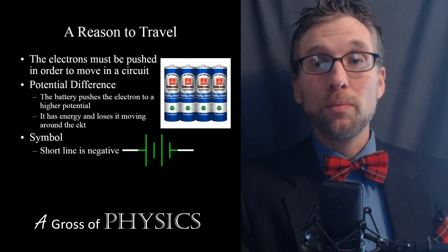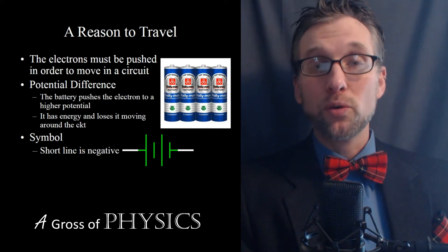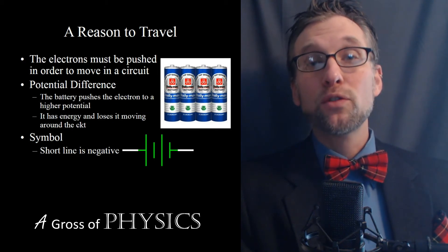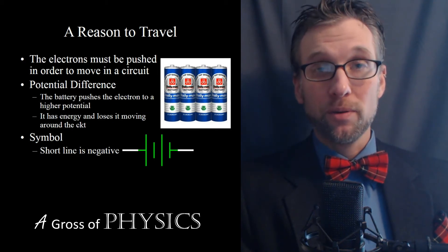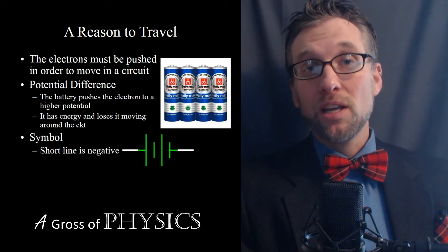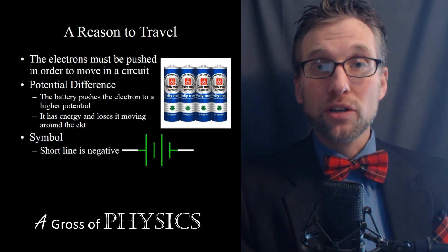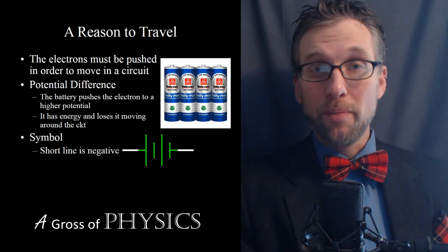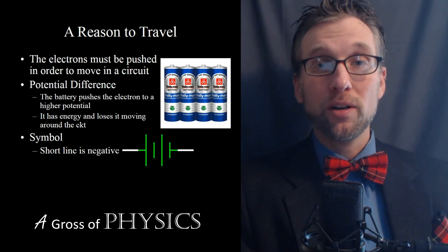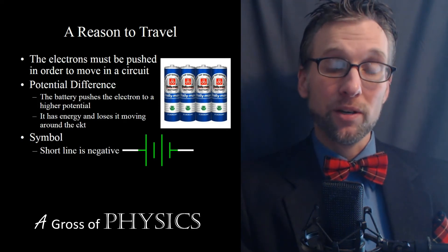So the electrons will be pushed away from the negative terminal and move towards the positive terminal. And that's because of the attraction of unlike charges. They're repelled by like charges, that's why they're pushed away from the negative terminal, and they're attracted to the positive terminal.